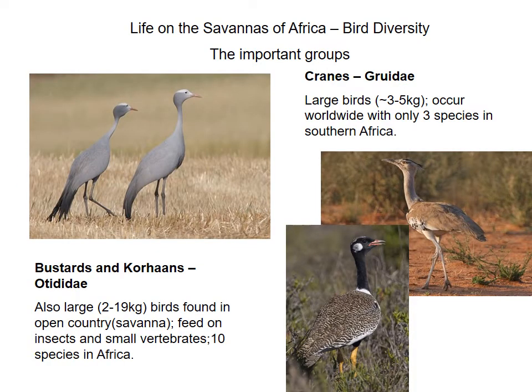South Africa's national bird, the blue crane, is one of only three crane species in Southern Africa. These are large birds that occur throughout the world. We also have the bustards and korhaans — the kori bustard, the larger bird, gets up to about 19 kilograms and is probably one of the world's largest flying birds — you can think of it as the A380 of the savannah. They are generally open-country birds that feed on a range of species, with small vertebrates and insects being the most important groups in their diet.